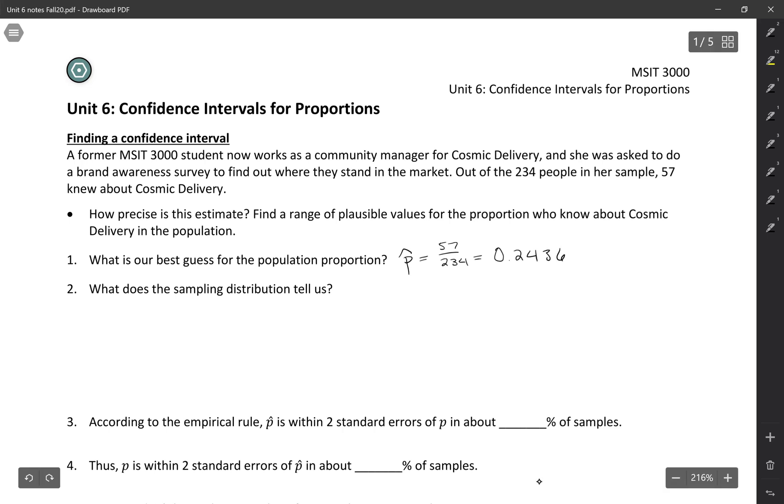So we have our estimate, but we want to know how precise is this estimate? We want to find a range of plausible values for the population proportion, the proportion who know about Cosmic Delivery in the population. So to do this, we're going to use a sampling distribution.